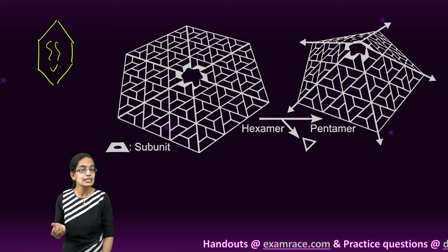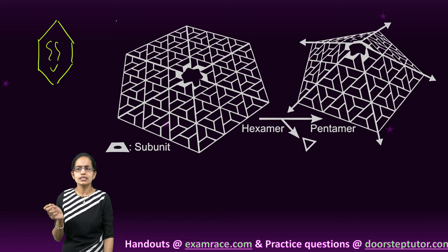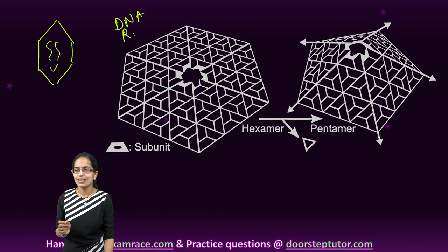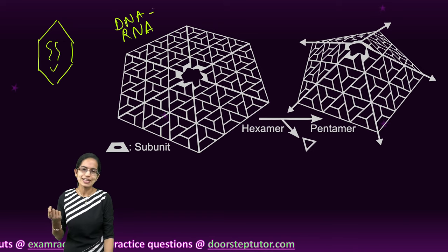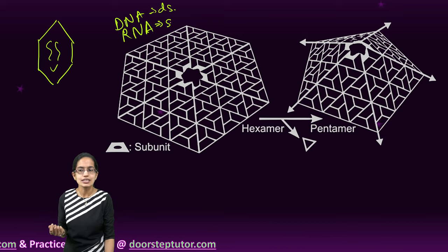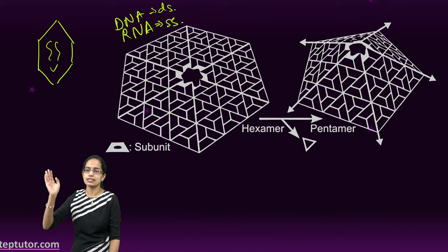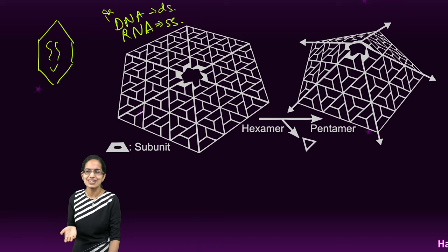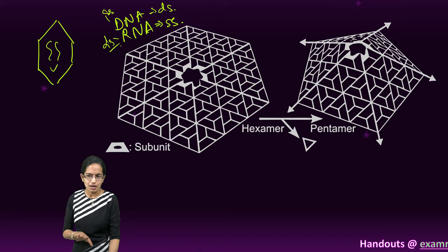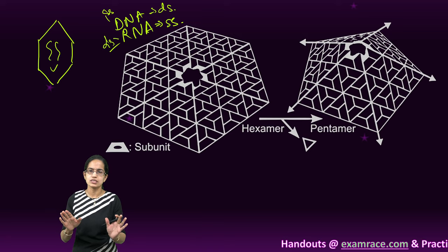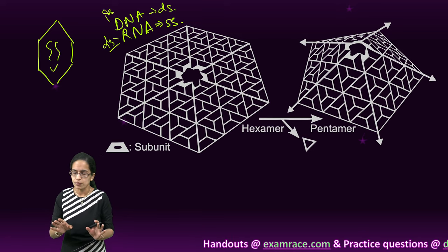This virus has an inner genetic material. This genetic material could be either DNA or RNA. Usually DNAs are double-stranded, RNAs are single-stranded, but with viruses we take away all the exceptions. Even DNA could be single-stranded, RNA could be double-stranded, so all four compositions of genetic material could be possible.